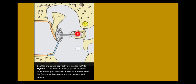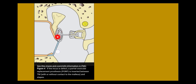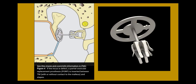If the incus is totally absent — where we have only the malleus remnant and the stapes — then a partial ossicular replacement prosthesis, or PORP, is inserted in titanium between the tympanic membrane and the stapes. This may connect with the remnant of the malleus. This is the partial ossicular replacement prosthesis.